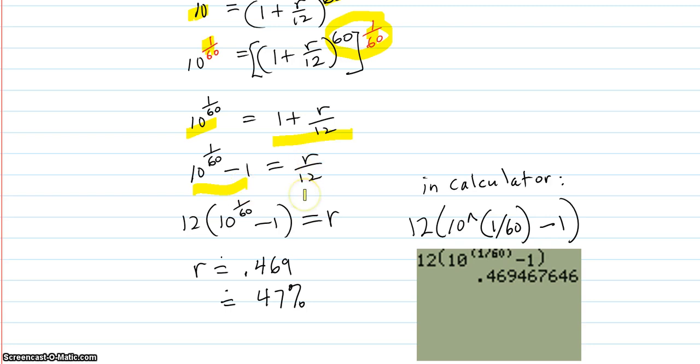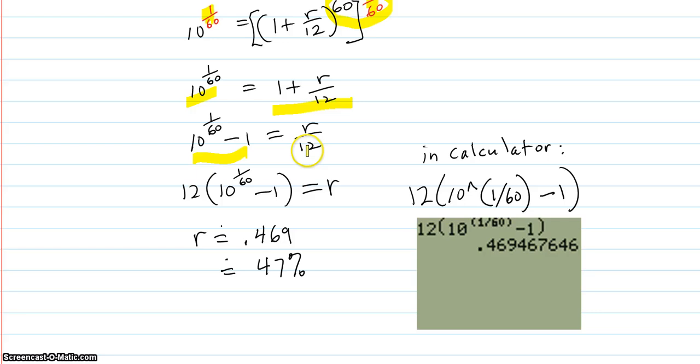Then we're going to subtract 1 from both sides. It knocks off over here and becomes subtracted 1 over there. r over 12. Multiply both sides by 12. Knocks it off of here. Brings it over to this side.